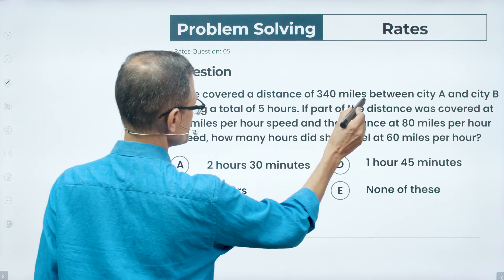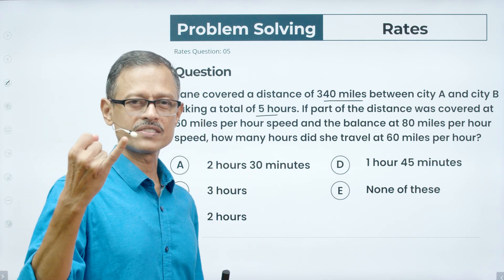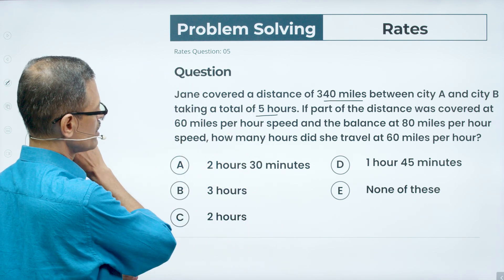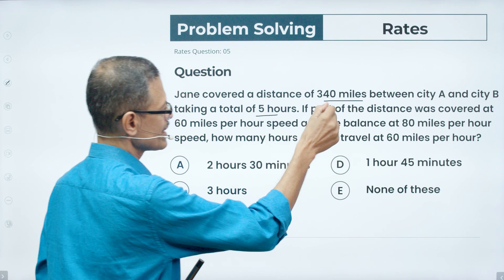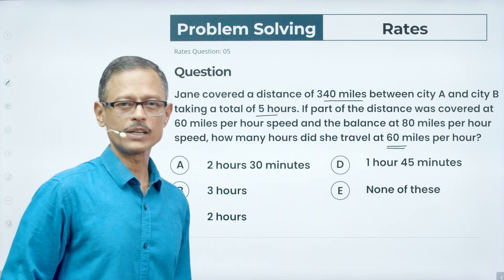Jane covered a distance of 340 miles between city A and city B, taking a total of 5 hours. So total distance covered is 340 miles, total time taken is 5 hours. If part of the distance was covered at 60 miles per hour and the balance at 80 miles per hour, how many hours did she travel at 60 miles per hour is what we need to find out.